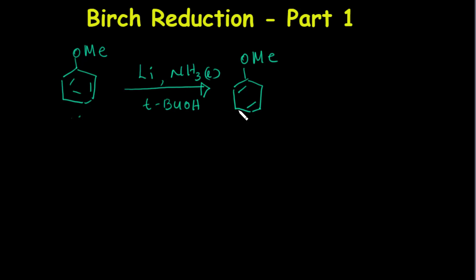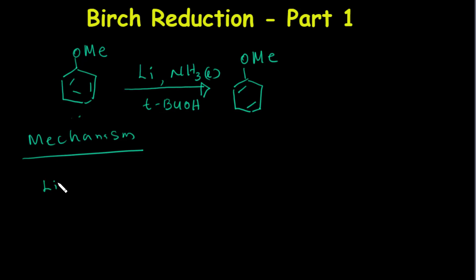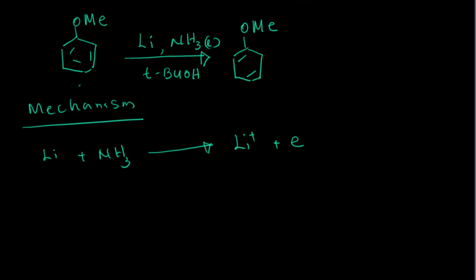Let's start the mechanism. First of all, when you have lithium — sometimes sodium metal can also be used, but I'm using lithium as the example — when lithium is dissolved in liquid ammonia, it produces lithium cation (Li⁺) and a solvated electron. This solvated electron is actually the source that starts this reaction.